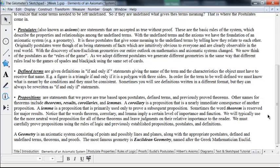So when we have propositions, they have to be carefully proved, and we'll be using the rules of logic and previously established propositions, postulates, and definitions to prove them. And so this entire structure of undefined terms, postulates, defined terms, and propositions, along with the proofs of the propositions, forms an axiomatic system. So a geometry is an axiomatic system consisting of points and possibly lines and planes, along with appropriate postulates, defined and undefined terms, theorems, and proofs. And the most famous of these is Euclidean geometry, of course, named after the great Greek mathematician Euclid. But we'll also be studying not only foundations of Euclidean geometry, but also some foundational work in several non-Euclidean geometries as well.